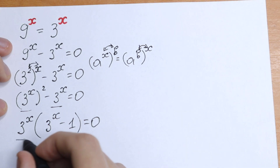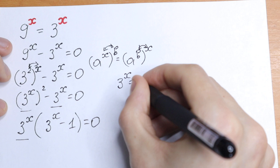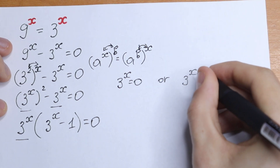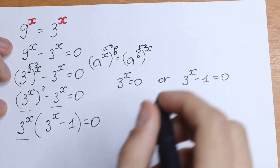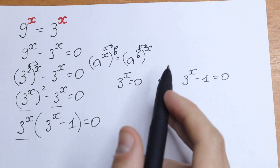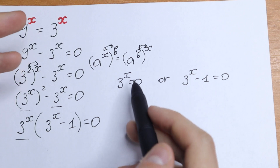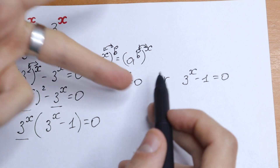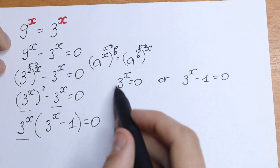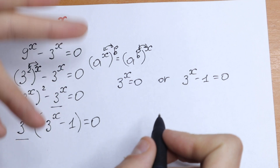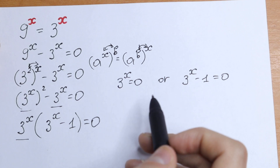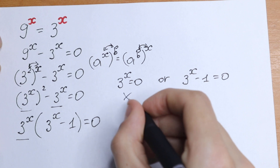The only case this works is when one factor equals 0 or the other equals 0. First case: 3 to the power x equal to 0. Take a look — how can you solve it? This equation has no solution, because there is no value of x such that 3 raised to that power equals 0. If you draw a graph, the exponential function never touches zero. So this case gives no solution.